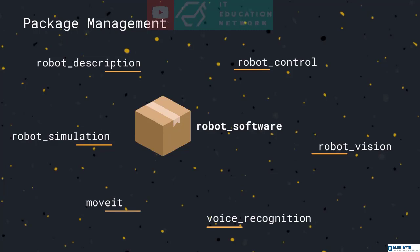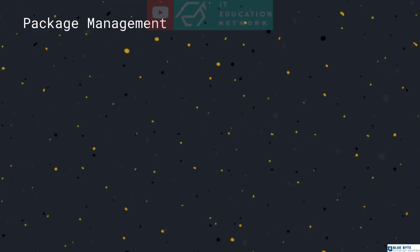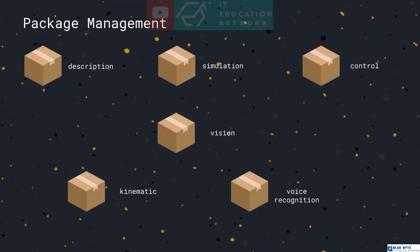maintainability and also modularity. A better approach instead is to divide the robot's functionalities into different packages, where each package focuses on implementing a single functionality for the robot. Then, each package might contain multiple nodes, but the logic they implement relates to the same atomic functionality.